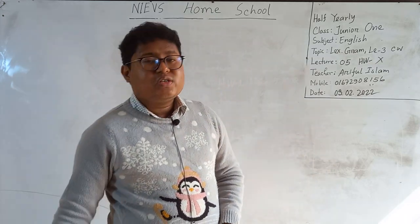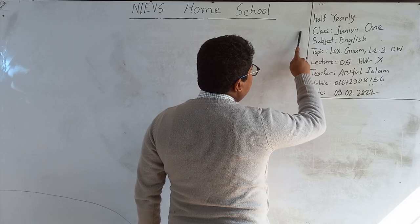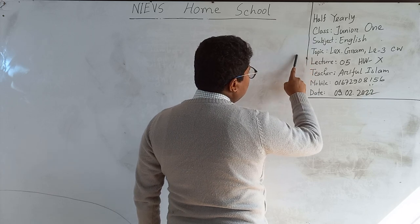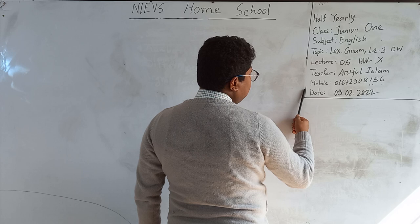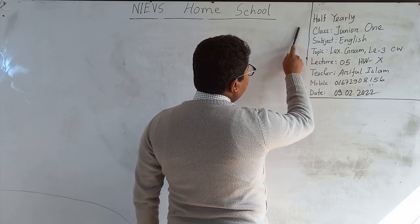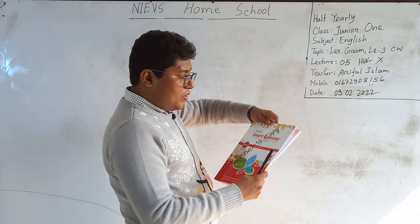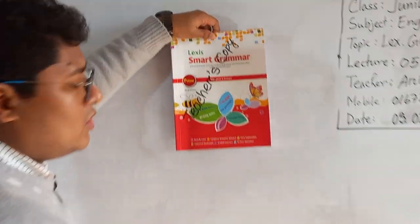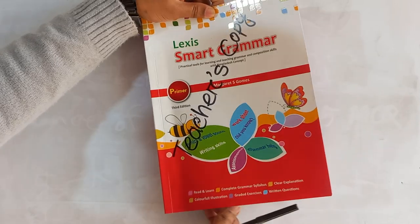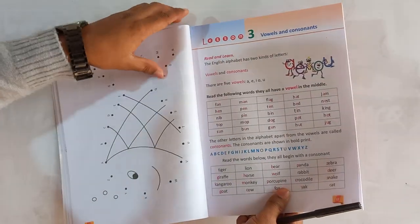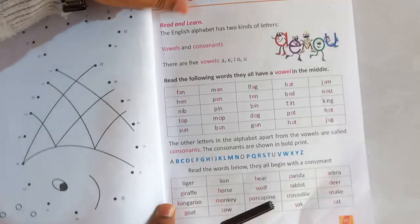So my dear students, let's see our today's class. This is Class Junior 1, Subject: English, Topic: Language is Grammar, Lesson 3, CW, Lecture 5. No SW today. Teacher: Aifu al-Islam. This is my mobile number and today's date, and this is all about your half-yearly examinations. So my dear students, open your Lexis Smart Grammar book, Primer, Third Edition, and go to Lesson 3, Vowels and Consonants, page number 17.